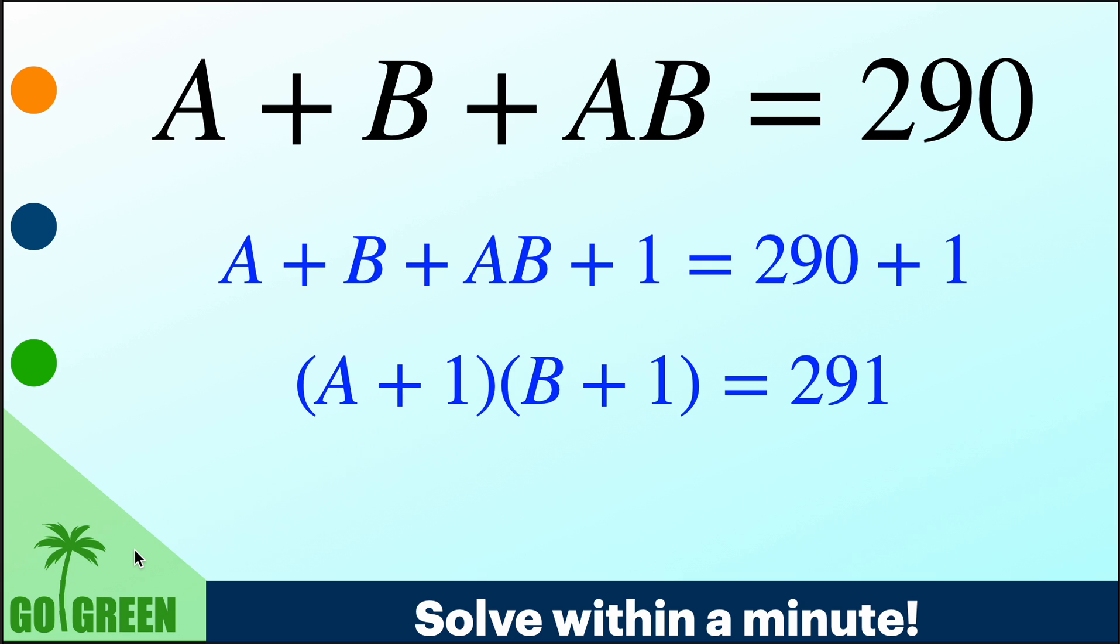And then how to write 291 as a product of two natural numbers and each of them are at least two, right? Because A is a natural number, B is a natural number, then A, B are at least 1.